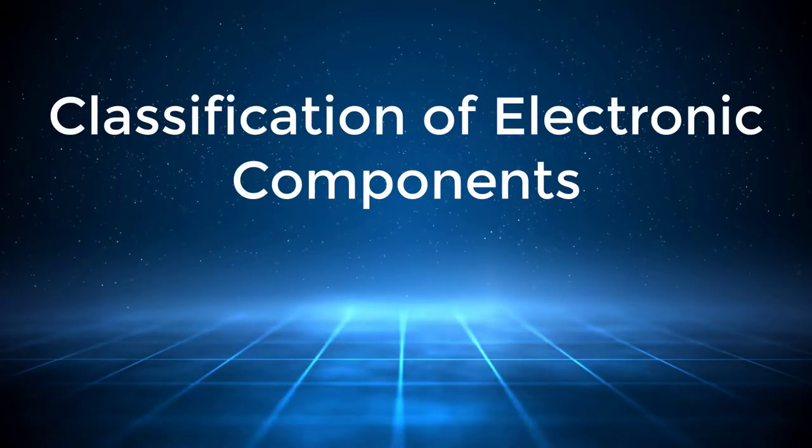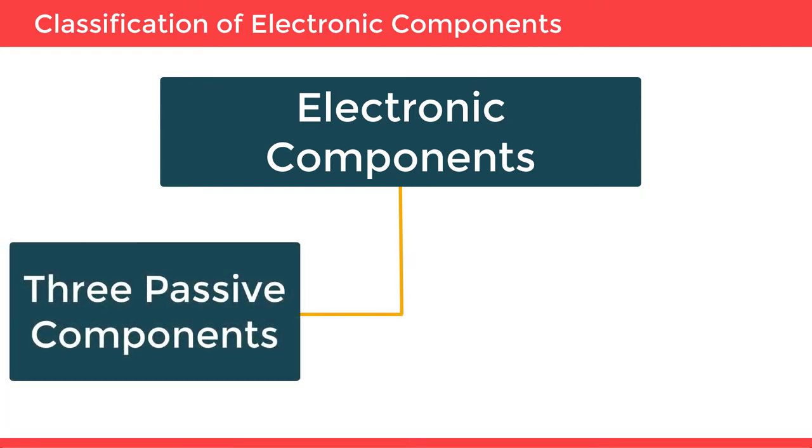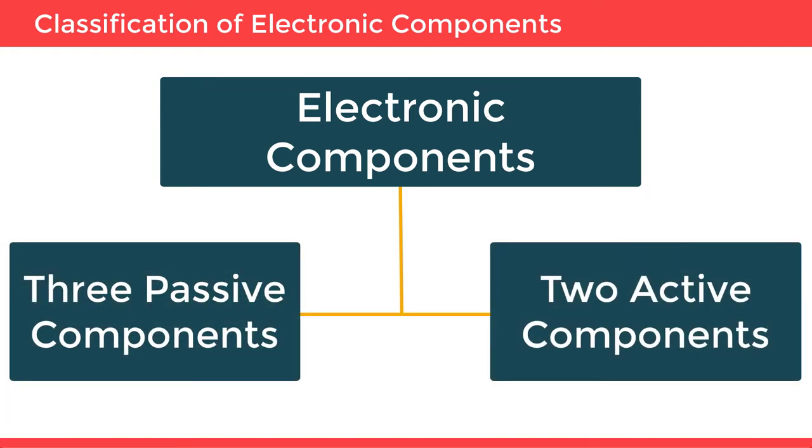Classification of electronic components. All electronic circuits contain a few basic components: three passive components and two active components.